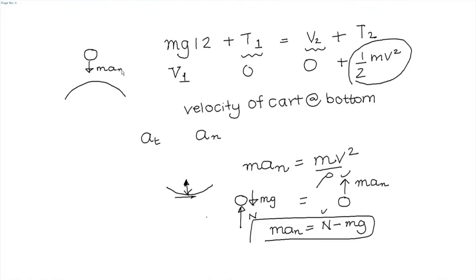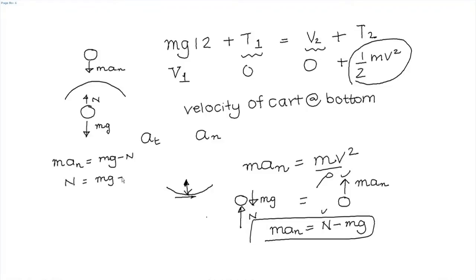m*a_n acts in this direction. The forces acting on the cart are gravity m*g and the normal reaction N from the surface. So m*a_n equals m*g minus N, or N equals m*(g minus v squared divided by rho). Note that v squared cannot be controlled — it is determined by conservation of energy — but we can control rho. If rho becomes very small, this quantity can become negative, meaning the surface would have to provide a negative reaction.